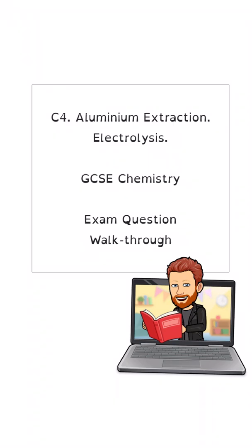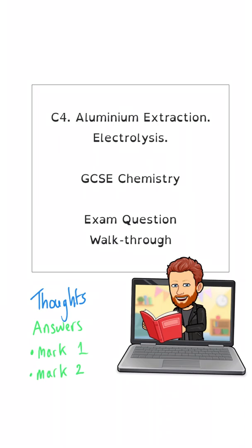Hello everybody and welcome to this GCSE Chemistry exam question walkthrough where I'm going to take a look at a question about aluminium extraction through the process of electrolysis. When I go through these questions I'm going to write down my thoughts in blue and the answers that will actually get you the marks in green, so you can see how that breaks down on a mark by mark basis.